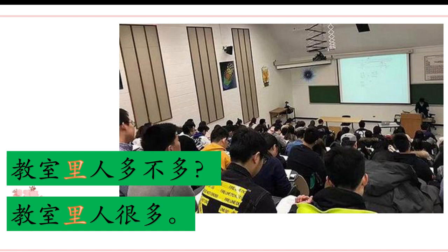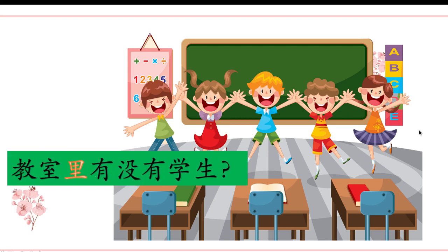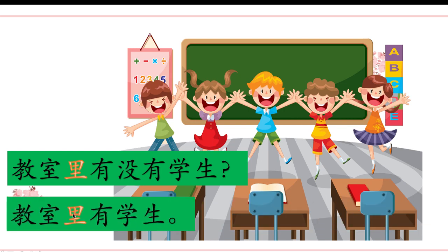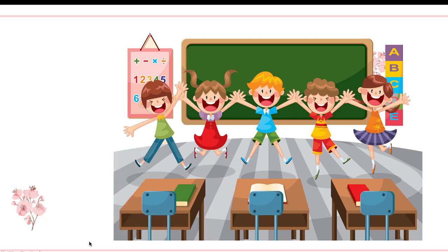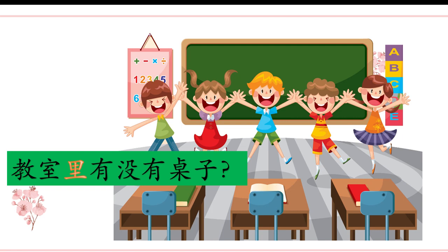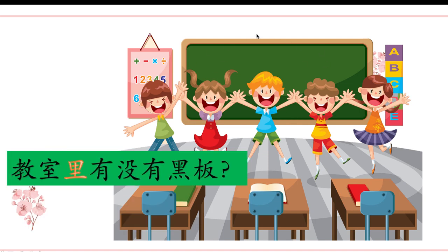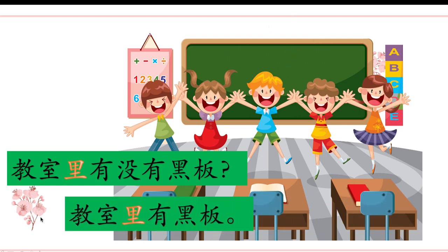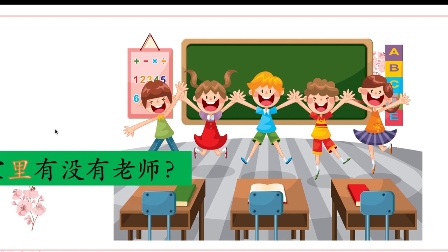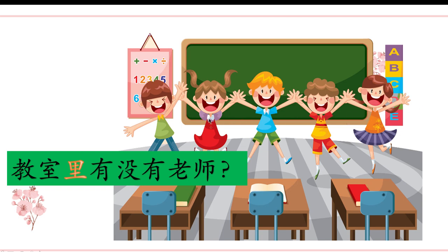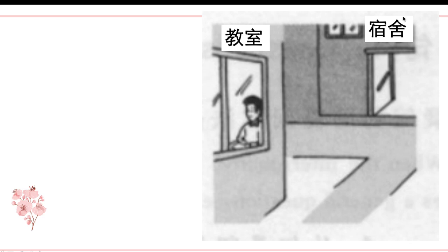For all adverbs, you can find part one video to review. Let's continue. 教室里有没有学生? Positive answer: 教室里有学生. 教室里有没有桌子? — 桌子 is table. Positive: 教室里有桌子. 教室里有没有黑板? Positive: 教室里有黑板. 教室里有没有老师? Negative: 教室里没有老师.